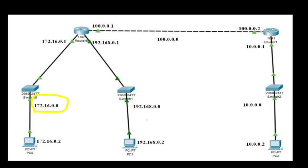Then we have another network where the PC IP address is 192.168.0.2 and the router interface for this network is 192.168.0.1. Then we have a third network with network address 10.0.0.0 — the PC IP address is 10.0.0.2 and the router interface connected to this PC is 10.0.0.1. Finally, we have a fourth network 100.0.0.0 in which the two routers are connected, with IP addresses 100.0.0.1 and 100.0.0.2.